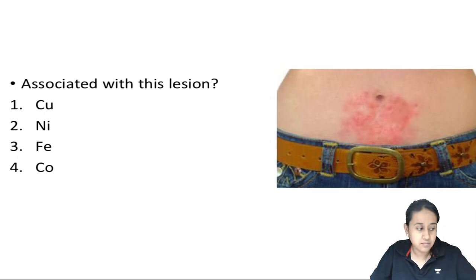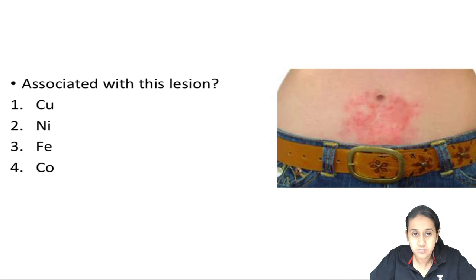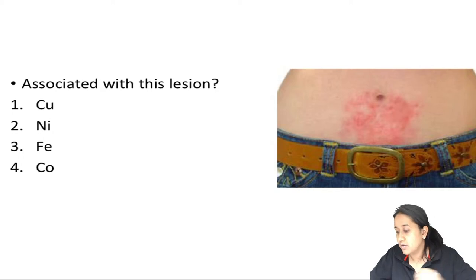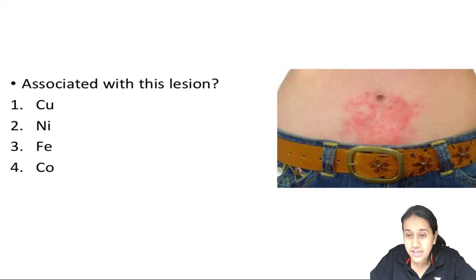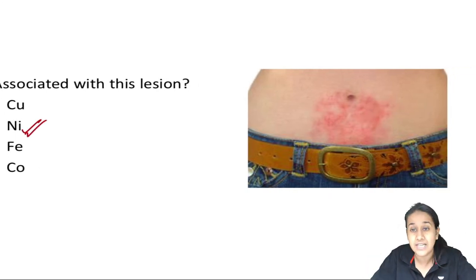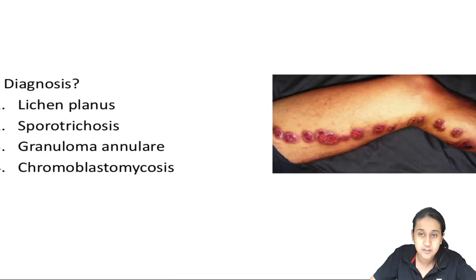What is associated with this lesion? Options: copper, nickel, iron, or cobalt. Because of the belt there is eczema surrounding the periumbilical region - a very classical image of allergic contact dermatitis secondary to the buckle of the belt. The most common allergen in metal is nickel. The answer is option number 2: nickel. Very classical allergic contact dermatitis.